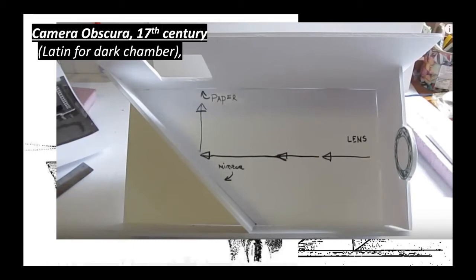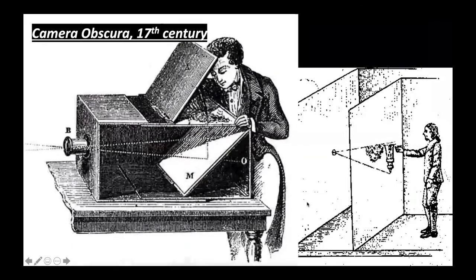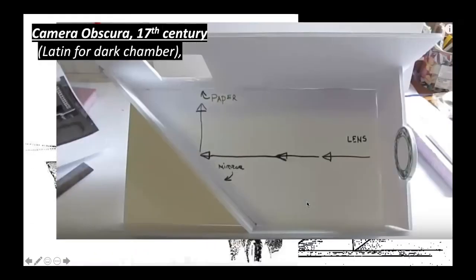This is a great image where it shows you how the light would come through the lens, it would hit a mirror and then go out on this opening and project. So that first image, you can kind of see this projection — it's upside down — but an artist could have a canvas here and trace that projection to use for painting.